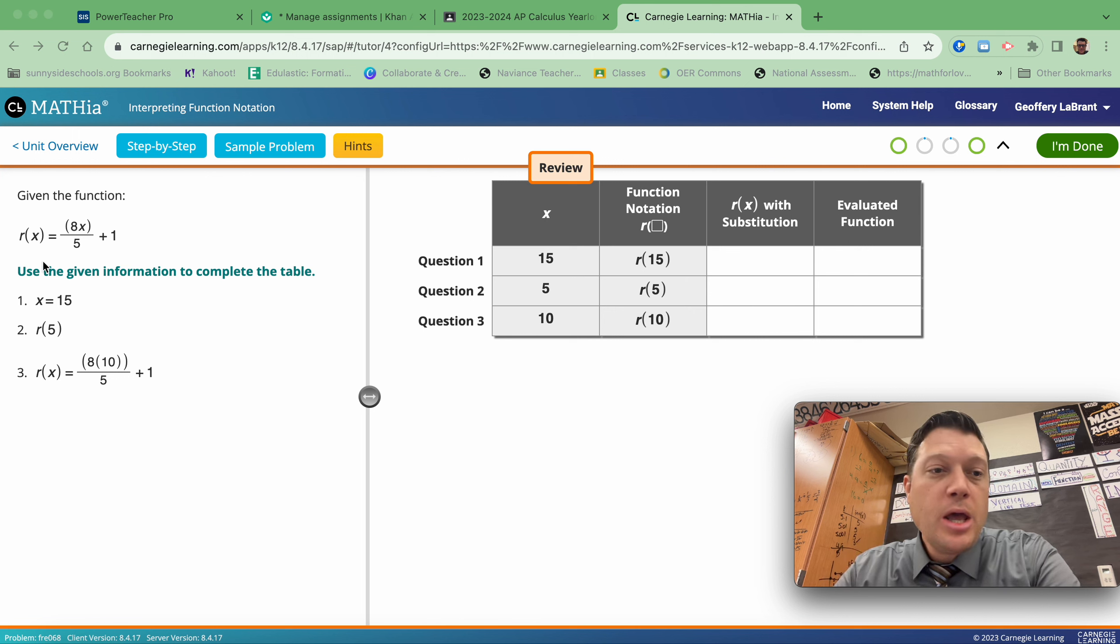Also, the notation for this function, it's called function R. So I'm going to use the letter R and then these parentheses throughout the entire problem because that's the name of the function. The 15, the 5, and the 10 fill in the blank.